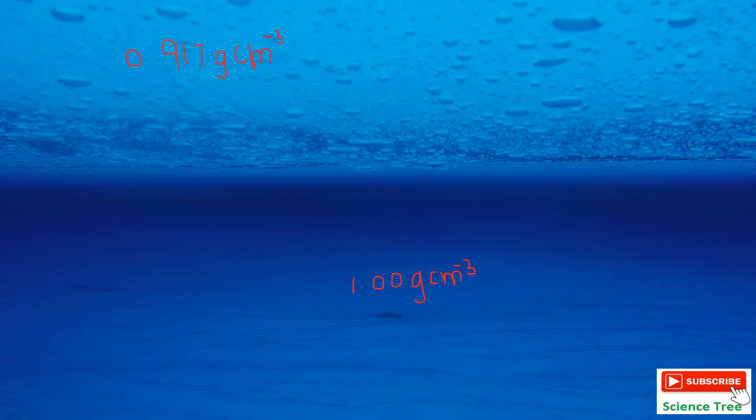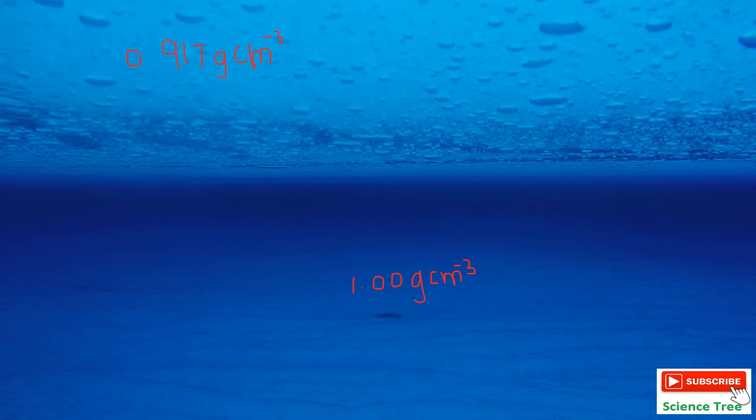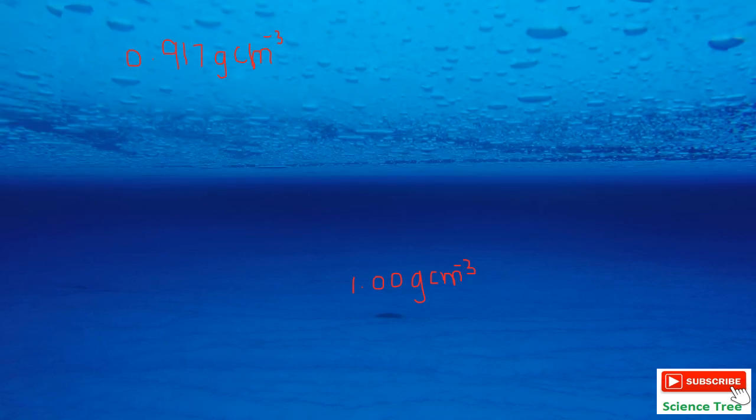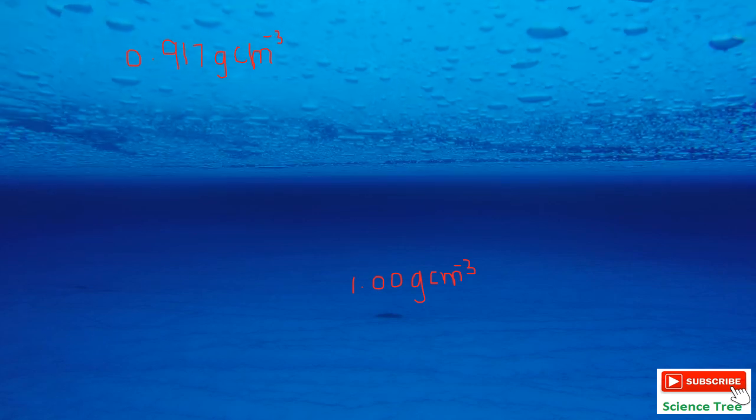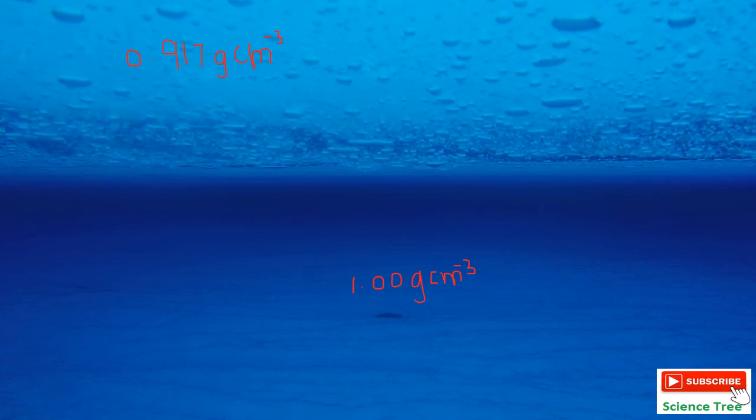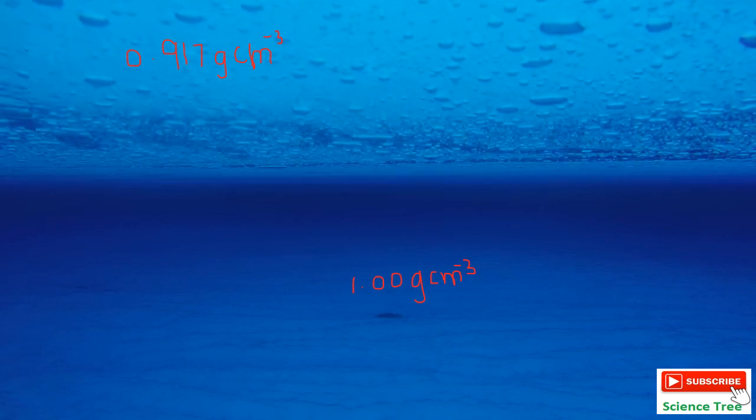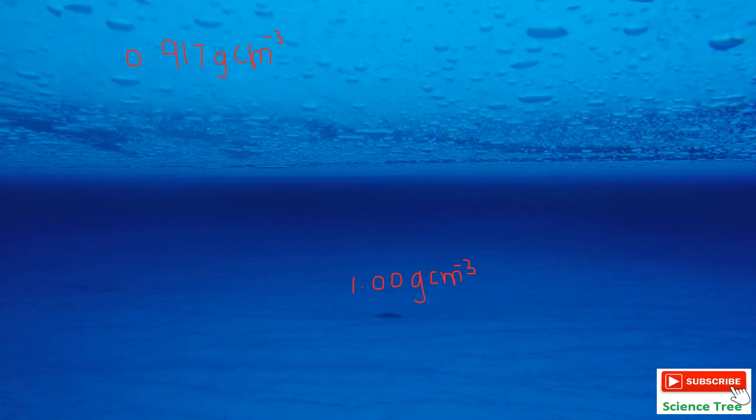So here ice has a density of 0.917 gram per centimeter cube and water, cold water has a density of 1.0. So now ice density is less than as compared to water. So that is why, as density decreases, volume increases and ice start floating over lakes.